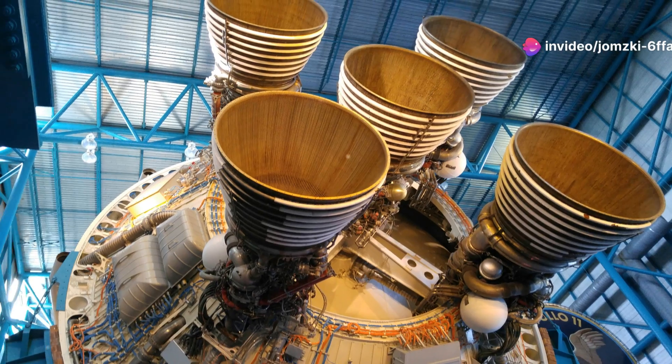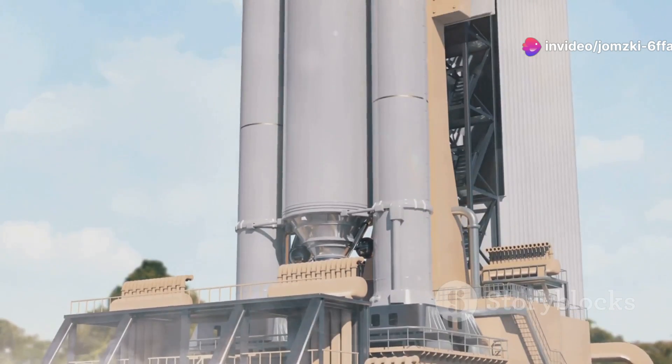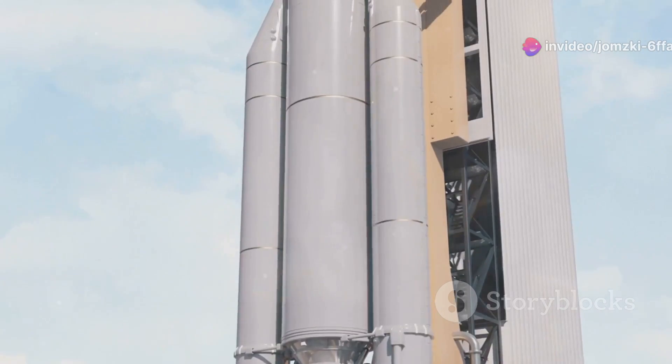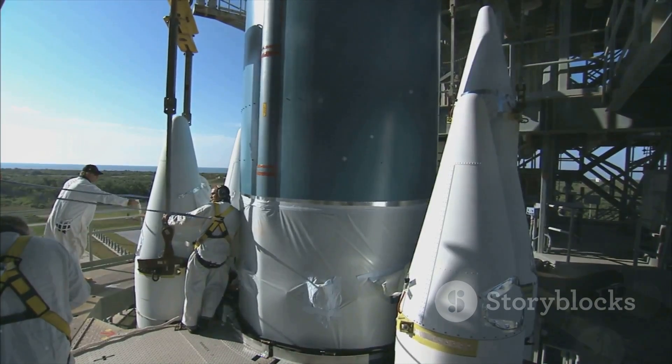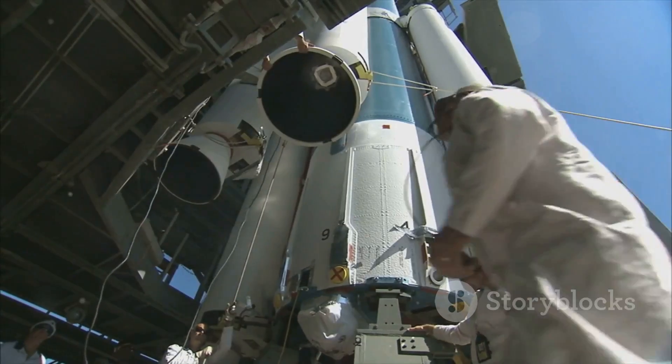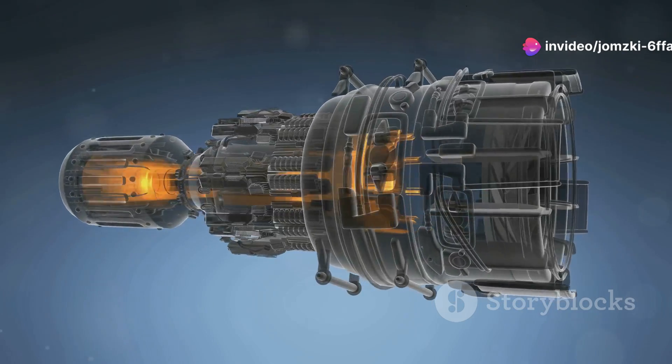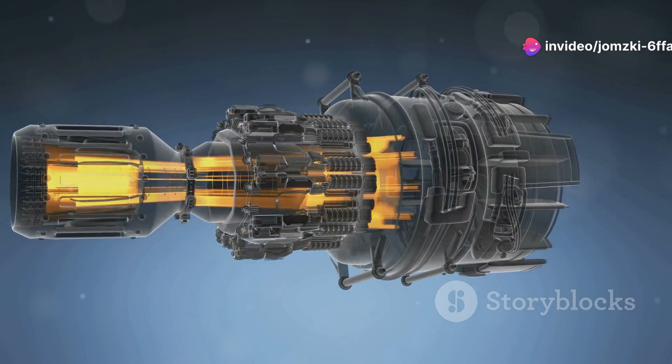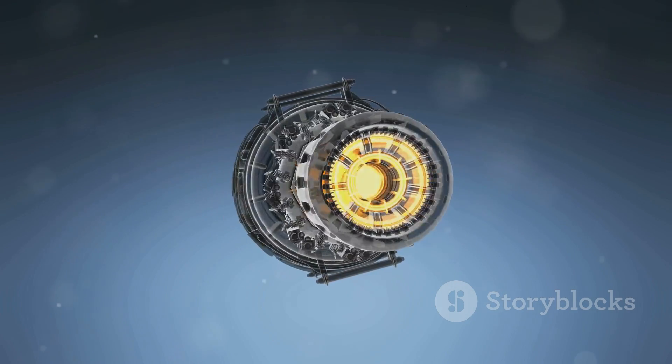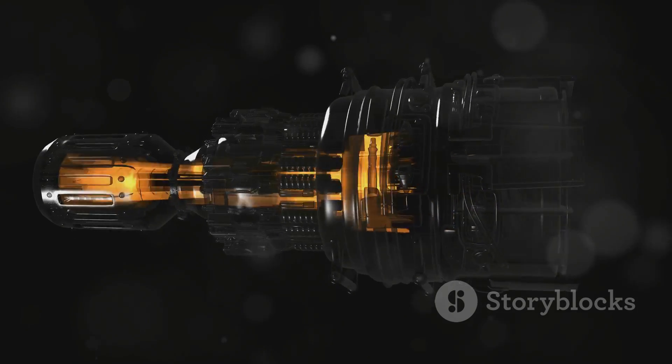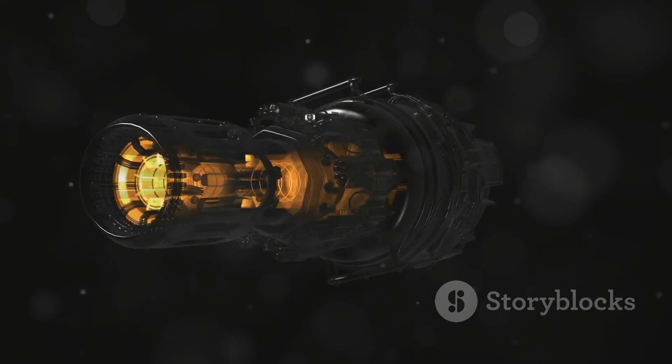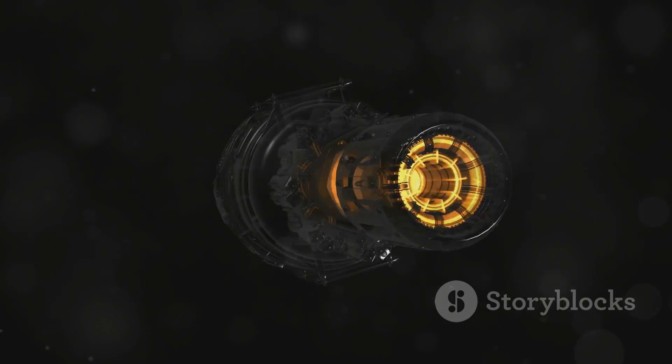For longer-range engagements and increased maneuverability, some SAMS employ liquid propellant rockets or ramjets. Liquid propellant rockets offer higher specific impulse, meaning they are more fuel-efficient, allowing for longer ranges. Ramjets, on the other hand, are air-breathing engines that become highly efficient at supersonic speeds. They work by compressing incoming air, mixing it with fuel, and igniting the mixture to produce thrust. These advanced propulsion systems provide SAMS with the speed and agility needed to intercept even the most elusive targets.